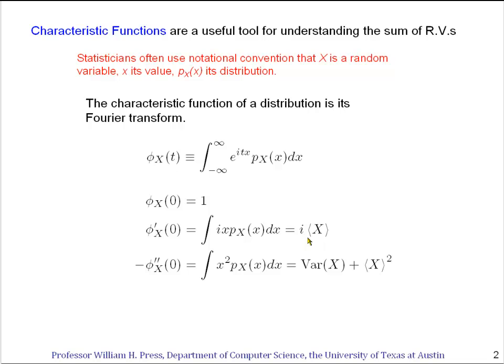Similarly if we take two derivatives with respect to t we'll bring down an i x squared which is a minus. I've put it over on the left hand side x squared and we see that the second derivative of the characteristic function evaluated at zero is just the uncentered second moment of the distribution p_X(x).